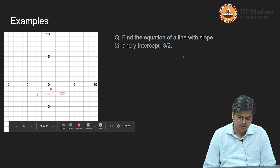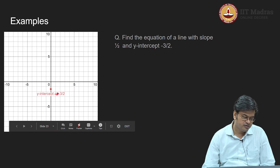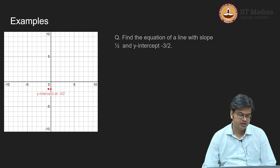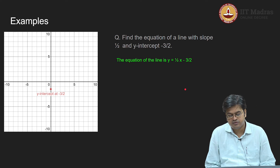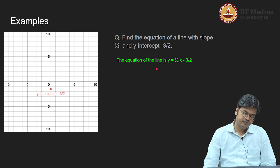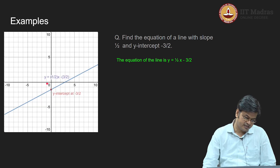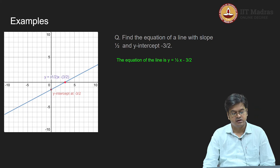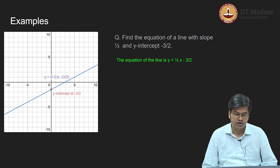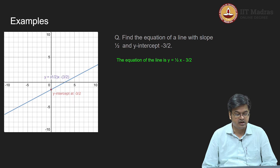The y-intercept of this particular line is at point minus 3/2 and the slope is one-half, so the equation of the line is (1/2)x minus 3/2. Let us figure out the x-intercept of this line. Setting y to zero, the x-intercept is 3. The question could also have been asked as: find the equation of a line with slope one-half and x-intercept equal to 3 — and the answer would be the same.